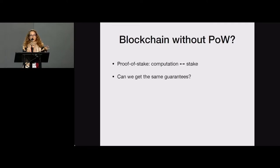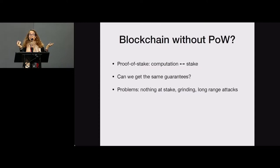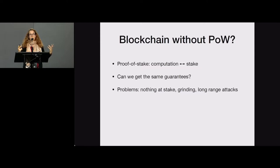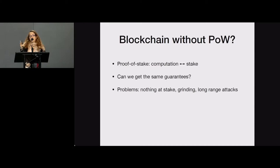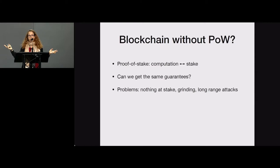Can we get the same guarantees with proof of stake? The security of Bitcoin relies on the fact that it costs money to create a block. When we try to remove proof of work, problems arise. One is 'nothing at stake': if there is a fork and miners don't spend money creating blocks, they can keep creating blocks on every fork, making it impossible to reach consensus. There's also the grinding attack — miners can try creating as many blocks as they like and grind through parameters to find one giving them an unfair advantage.